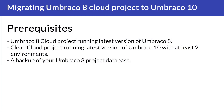First of all, you need to have an Umbraco cloud project running the latest version of Umbraco 8. You also need a clean project running the latest version of Umbraco 10 with at least two environments. And you also need a backup of your Umbraco project database. With that, we can now get started with migrating an Umbraco 8 project to Umbraco 10.